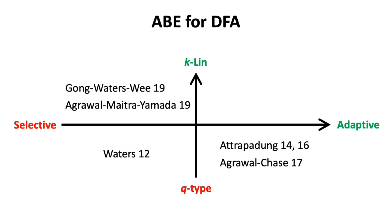Recently, some progress has been made to get schemes based on standard k-linear assumption. However, the selective model came back. So, it remains an open problem to build adaptively secure ABE for DFA under the k-linear assumption.